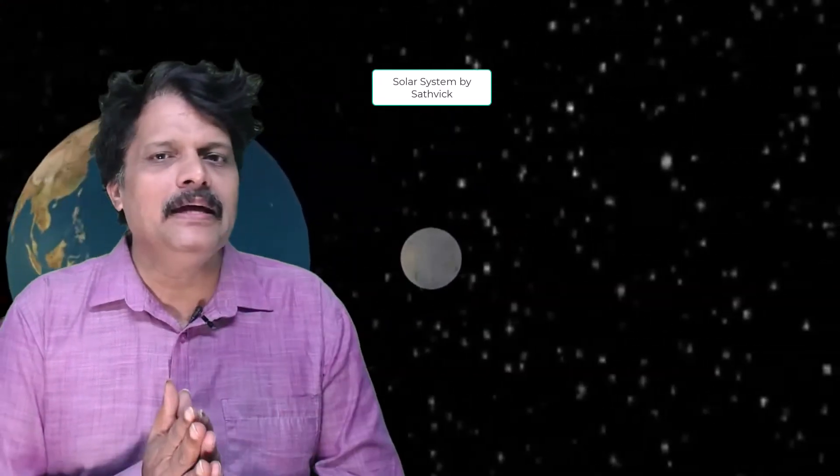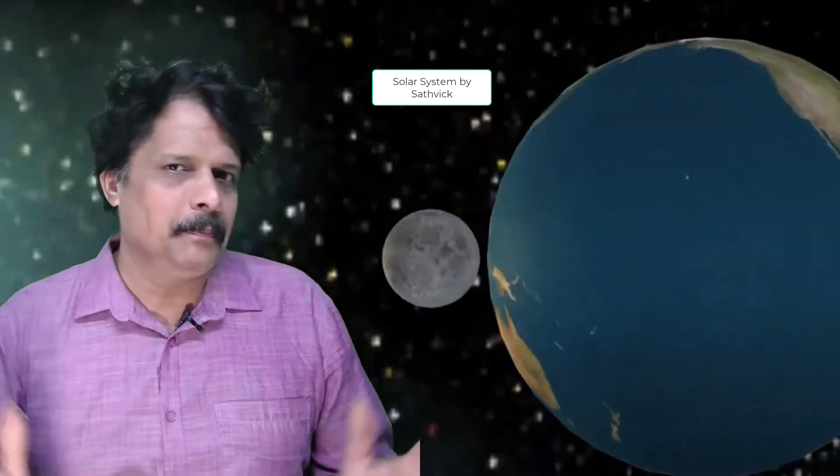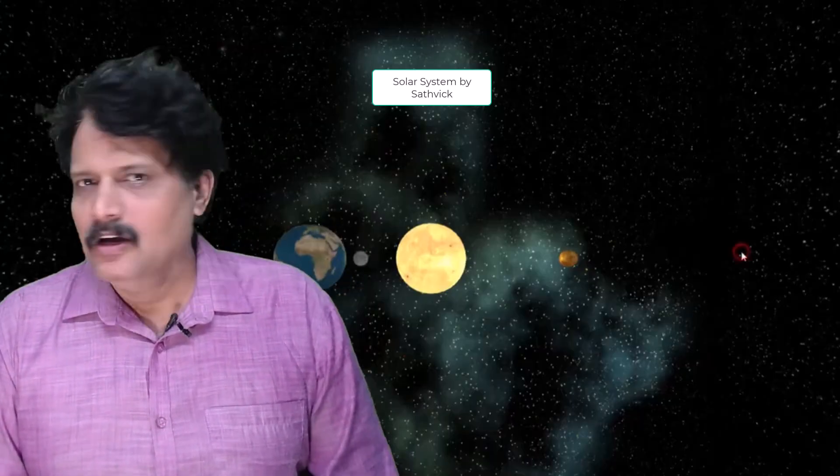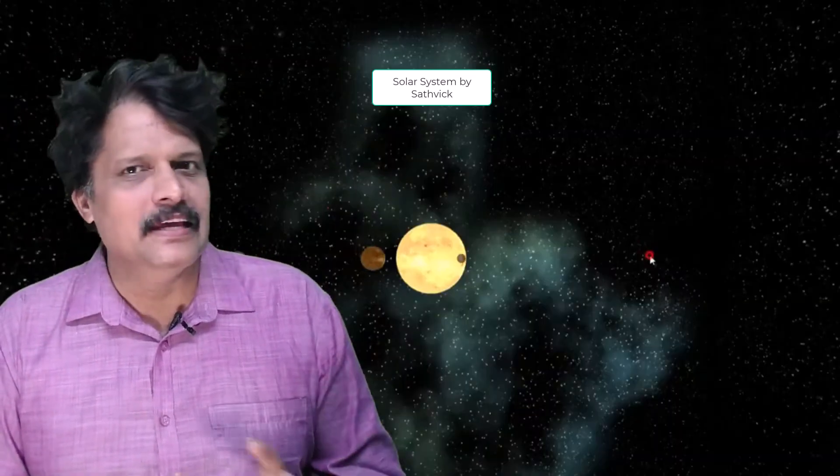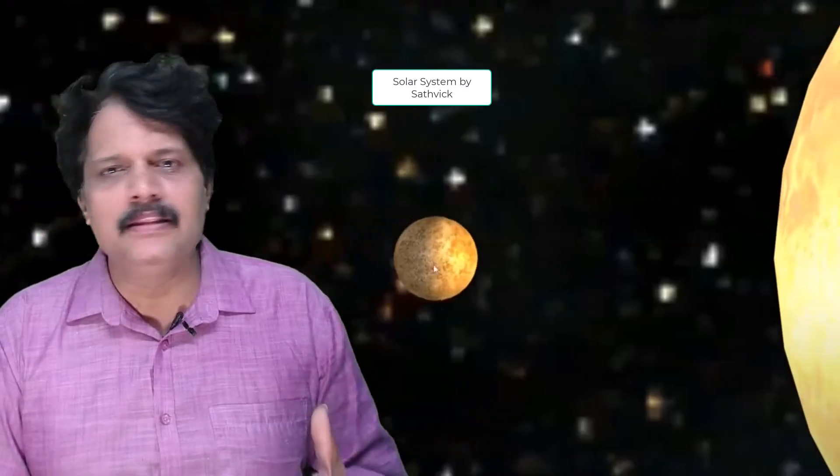Right now I am going to show you five planets as a preview. You can implement the same concept and make it for all nine planets. So let us begin this exploration of making this solar system.